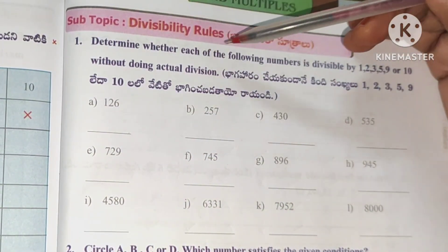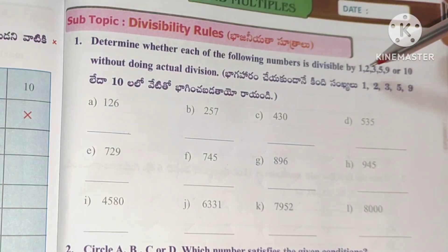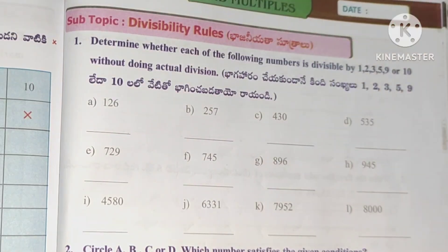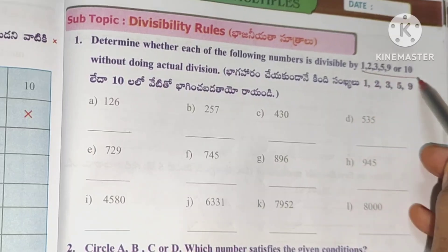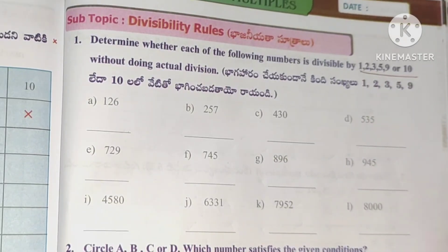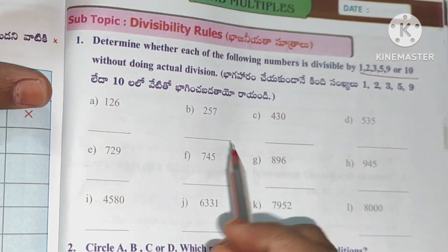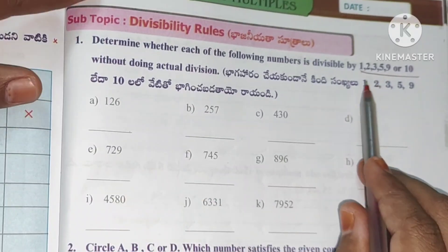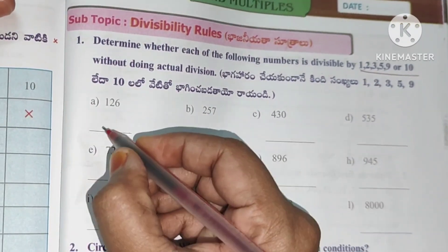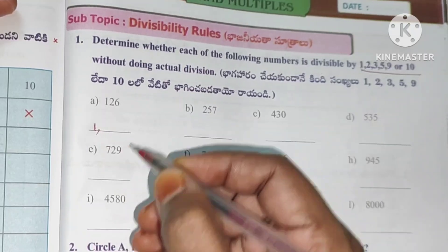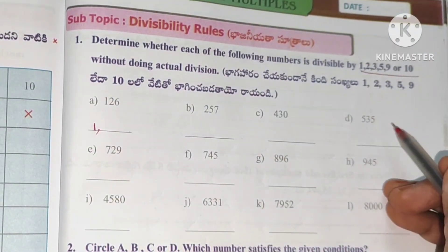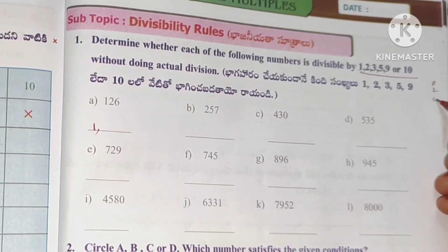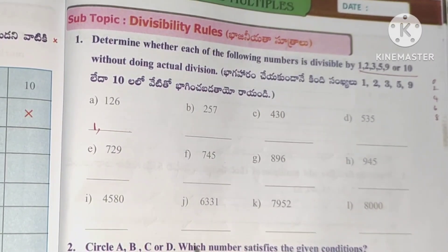First question: determine whether each of the following numbers is divisible by 1, 2, 3, 5, 9, or 10 without doing actual division. Obviously every number is divisible by 1. The divisibility rule for 2 is that the units place must have 0, 2, 4, 6, or 8.